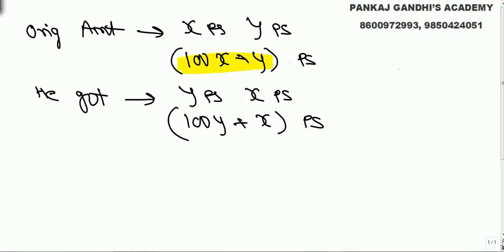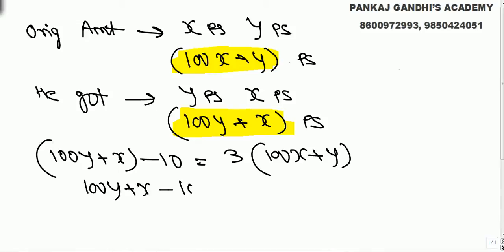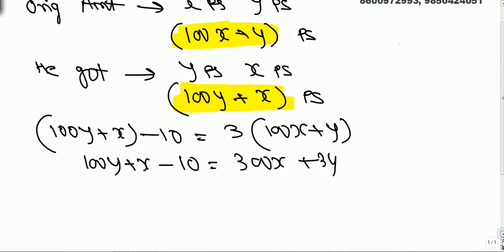The check was of 100x + y paise, but he got 100y + x paise. Out of this, he gave 10 paise to a beggar, and the remaining amount is thrice the original check amount. So: 100y + x - 10 = 3(100x + 3y), which gives us 97y = 299x + 10.